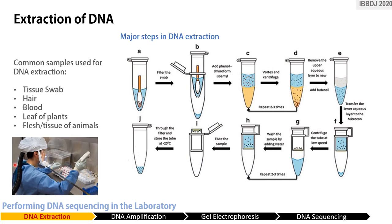The first step is to extract the DNA. The aim of DNA extraction is to isolate the DNA from proteins and other cellular materials. DNA can be sourced from any body cells. Common samples used are tissue swabs, hair strands, blood cells, leaves of plants, and any flesh or tissue of animals. The general process in DNA extraction starts with lysis of the cell using appropriate chemicals, precipitation and filtration by repeated vortex and centrifugation, and purification using spin columns.